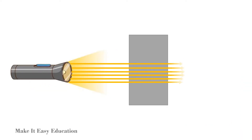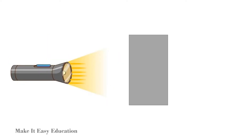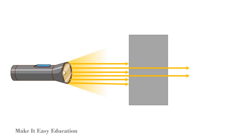Such material is said to be transparent. Clear water, cellophane, and glass are examples of transparent material. We can see very clearly through these materials. Some materials allow only some light to pass through them; such material is said to be translucent.